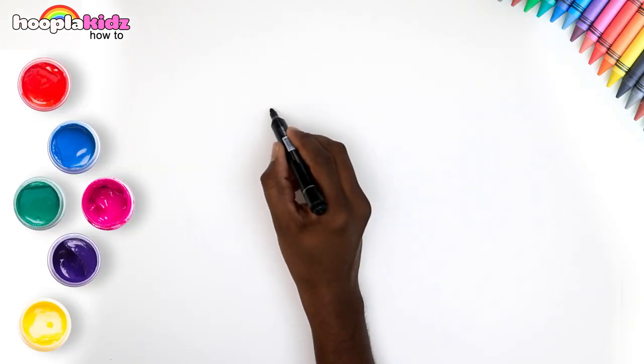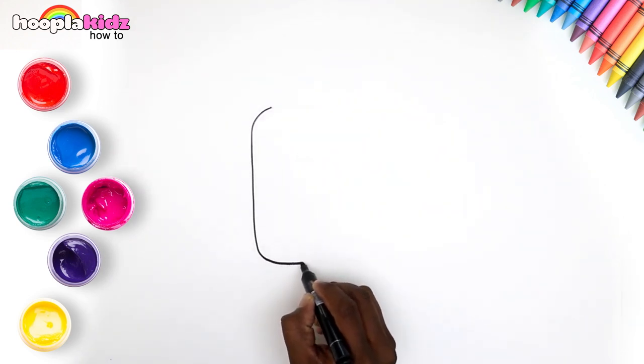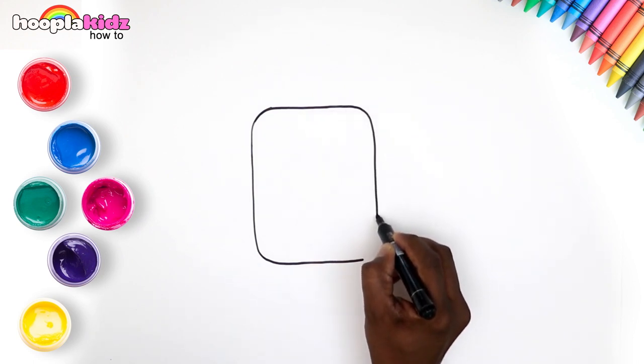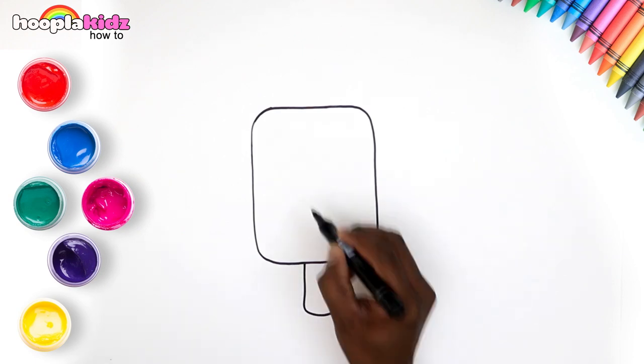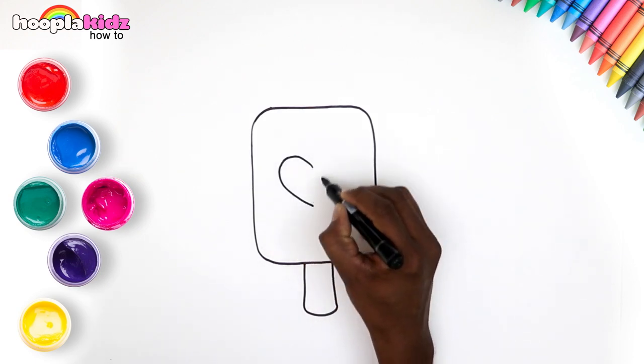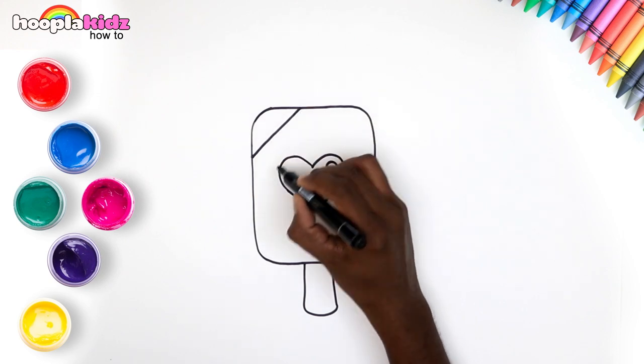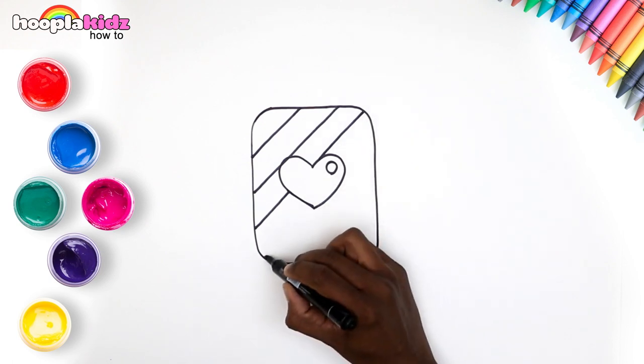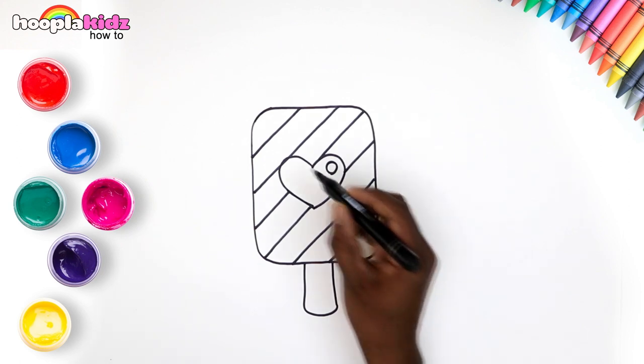Hi kids! Don't you love eating yummy popsicles? Let's learn how to draw and paint one today. We will start by making a rectangle. Then draw a smaller rectangle for the popsicle stick. Great! Now draw a cute little heart in the center of the popsicle. Just like that. Draw slanted lines across the popsicle. But don't go over the heart. Yes, just like that. Looks great already, isn't it?